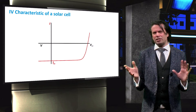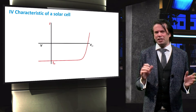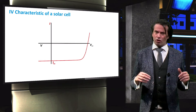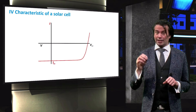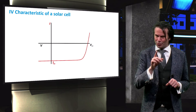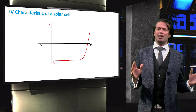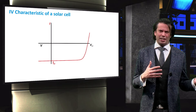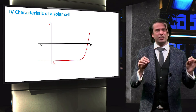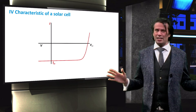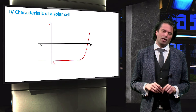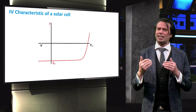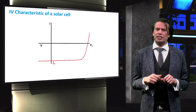Those of you with an electrical engineering background may already realize that this resembles the characteristic of a diode, and that is exactly correct. A solar cell is in fact a diode, and if the solar cell were in the dark, it would act electrically just like any other diode. However, illumination of the solar cell is what offsets it, as we can see here.